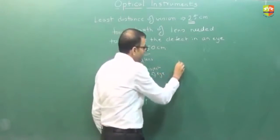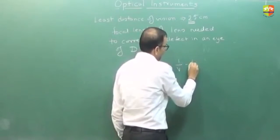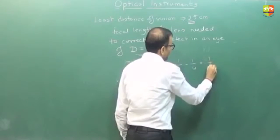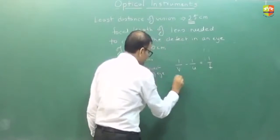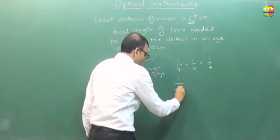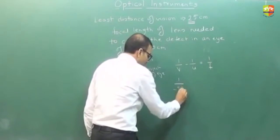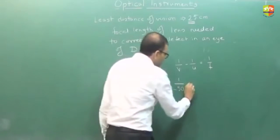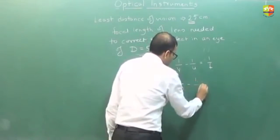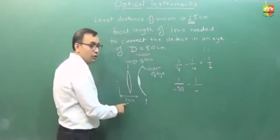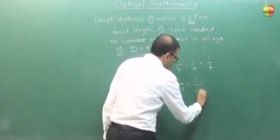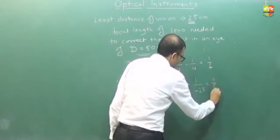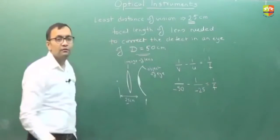Using the lens formula: 1/V − 1/U = 1/F. V is minus 50 because the image should be on that side, and U is minus 25. Substituting these values, F comes out to be 50.